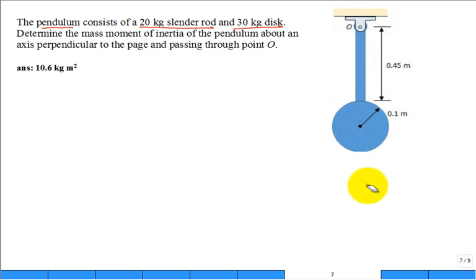It has a given mass as well. Determine the mass moment of inertia of the pendulum system. It's made of two parts. About the axis perpendicular to the page and passing through the point O. So here's point O right there.